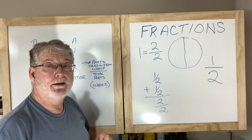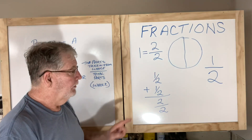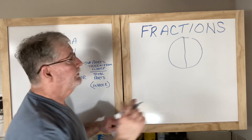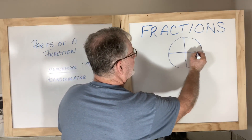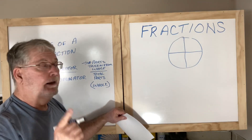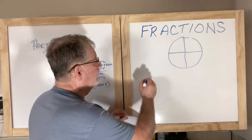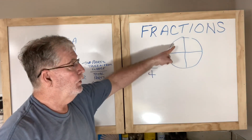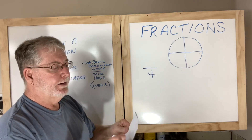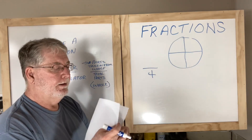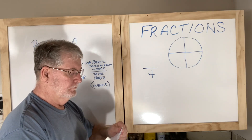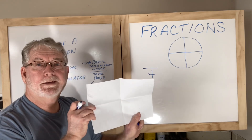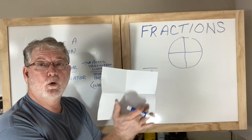Fractions don't get much more complicated than this, but let's do more examples. I'm going to clear the board and divide this circle into four parts. With the circle divided into four different parts, the denominator is going to be four — because that tells me how many total parts there are. Taking my piece of paper and dividing it into fours, I have four equal parts to this whole page, and likewise four equal parts to the circle.